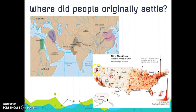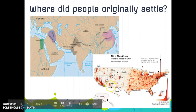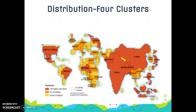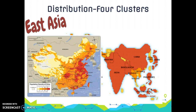This is even true for the United States — our population is highly clustered on the coasts. The four major population clusters all meet those needs: temperate climate, fertile soil, low-lying terrain, near a body of water, and able to grow food.